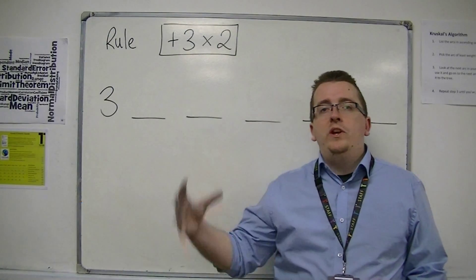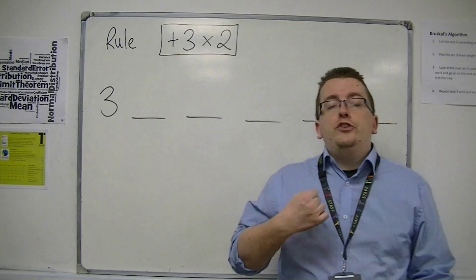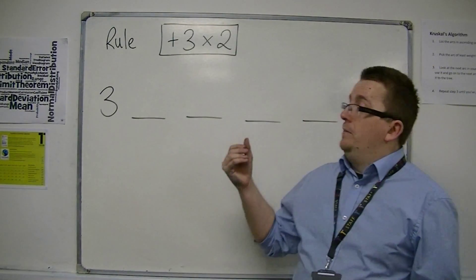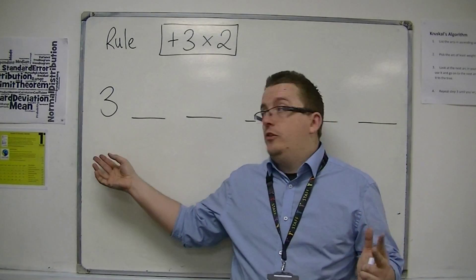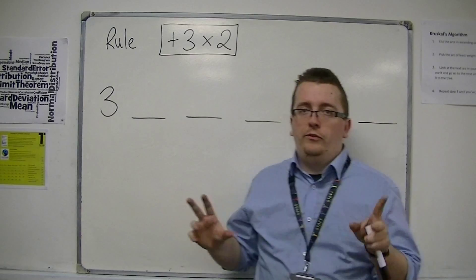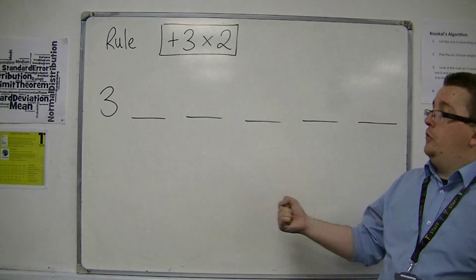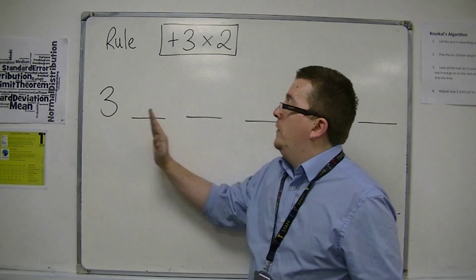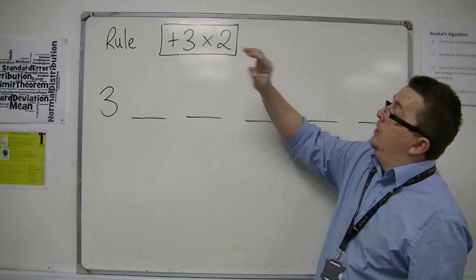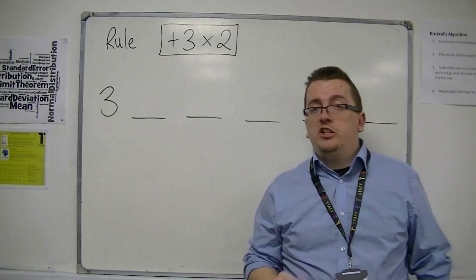In this video we're going to be looking at how we could be given a rule that generates a sequence when we're given a starting number. So I've given you the starting number 3, I've just come up with that number, it's not coming from anywhere else. So we're given a starting number 3, and we want to find what the next five terms of the sequence would be if the rule was plus 3 times by 2.